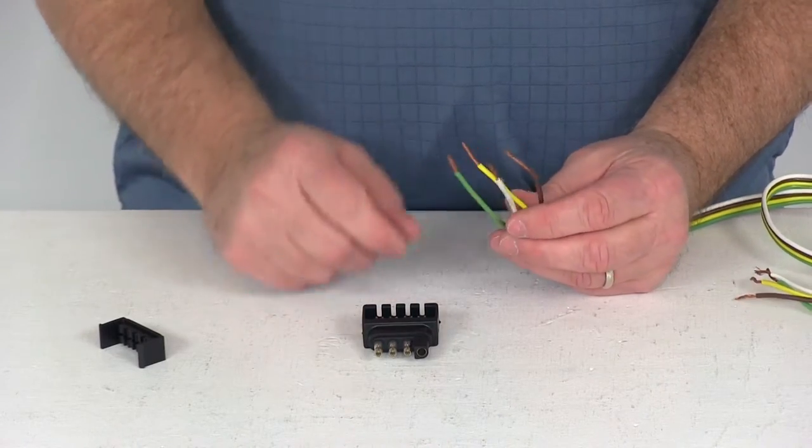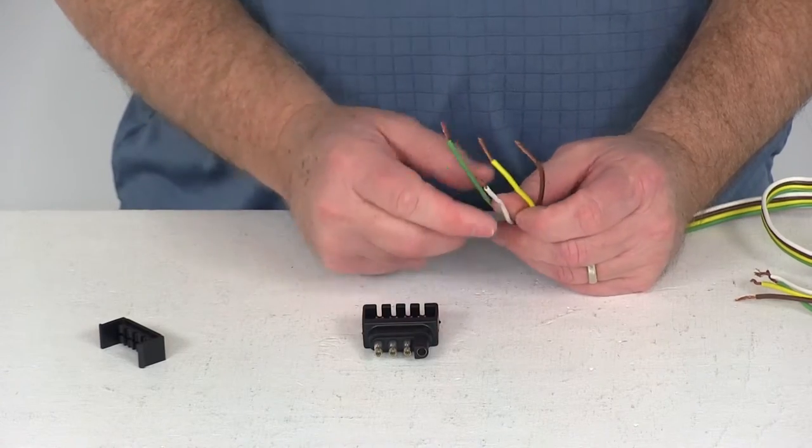So on your trailer, if you have a damaged connector, you cut it off and you have these wires, or if you just have the wires, you need a 4-Way.